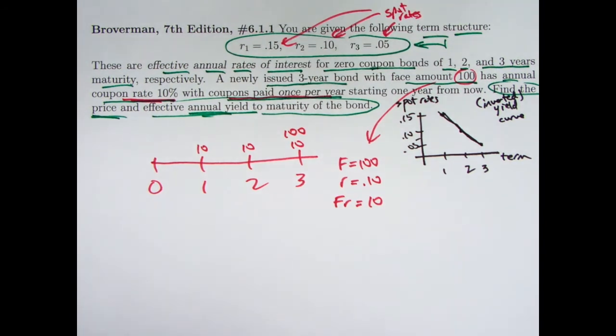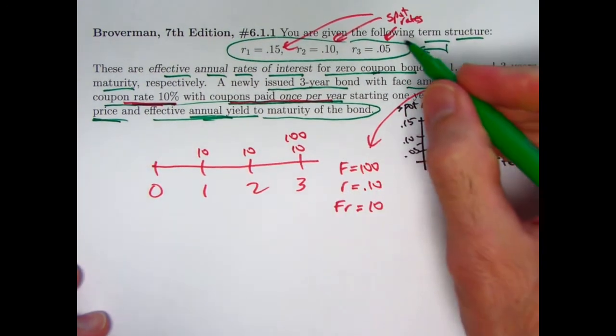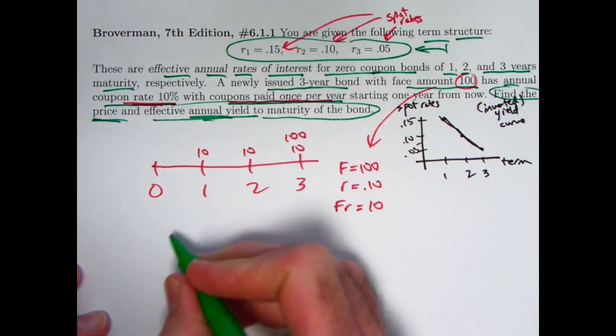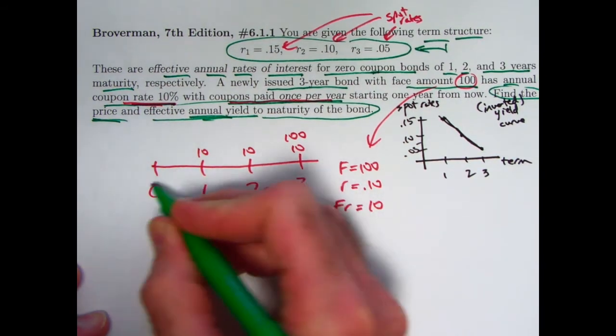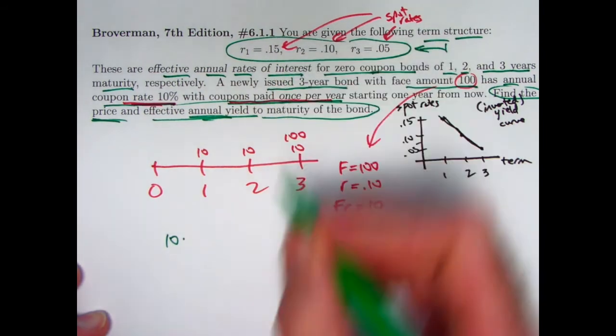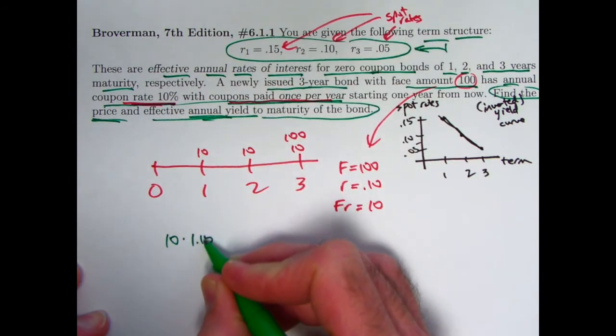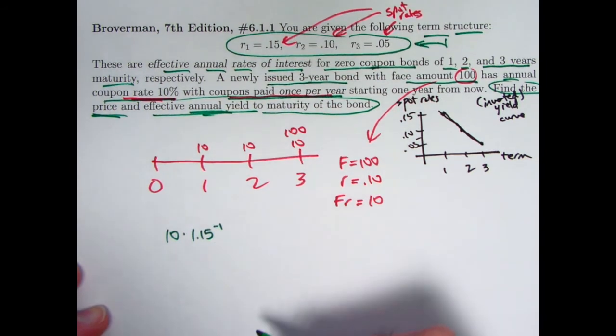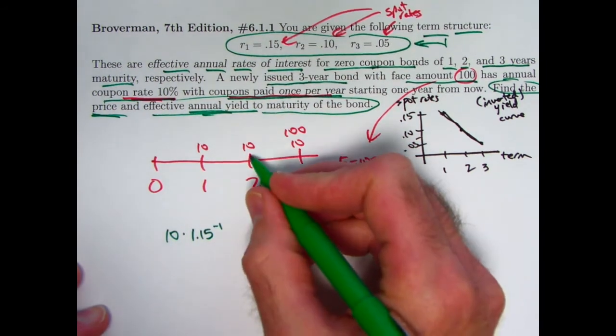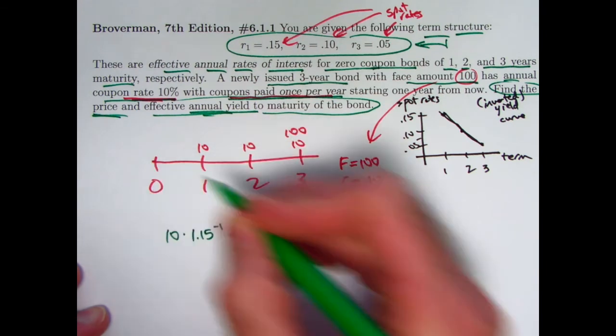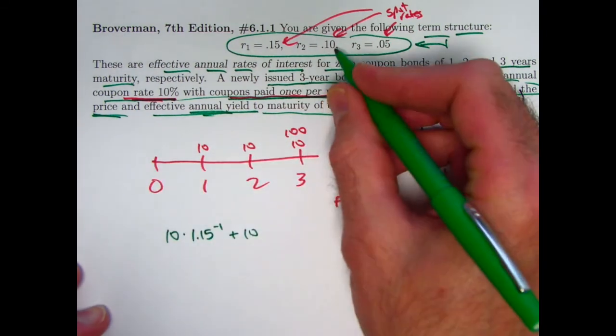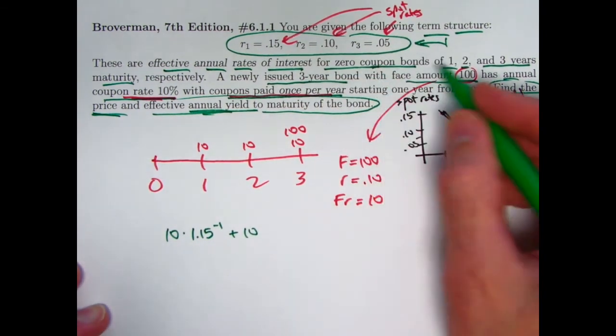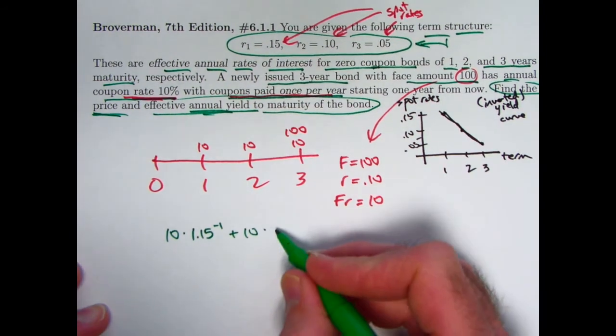What is the price based on this? We don't know the yield rate, so we're not computing the price based on the yield rate. We're going to find the yield rate. We are computing the price based on these spot rates in this term structure. We take the 10 at time one and discount it back to time zero using the 15% return. So multiply by 1.15 to the negative one, which would be effectively dividing by 1.15. Take the 10 at time two and discount it back two years to time zero, but use the 10% return on zero coupon bonds to do that discounting. Multiply by 1.10 to the negative two.